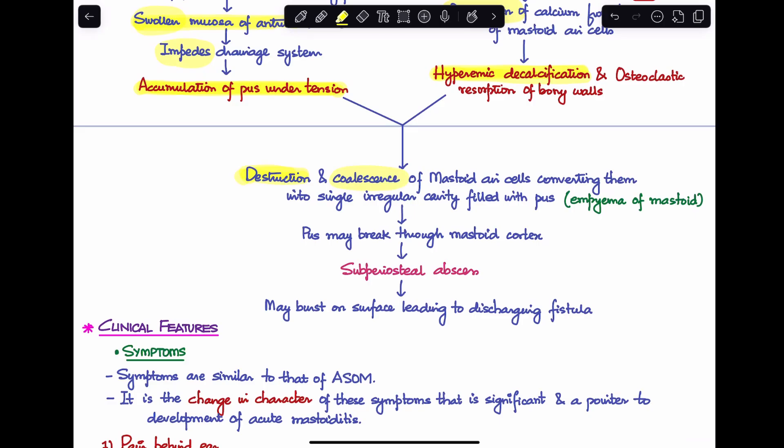This, together with the pus accumulated under tension, leads to destruction and coalescence of the mastoid air cells, converting it into a single irregular cavity filled with pus. At this stage it's known as empyema of the mastoid. The pus can break through the mastoid cortex, leading to subperiosteal abscess, which can further burst on the surface, developing a discharging fistula. This is the pathological process behind mastoiditis, subperiosteal abscess, and mastoid fistula.